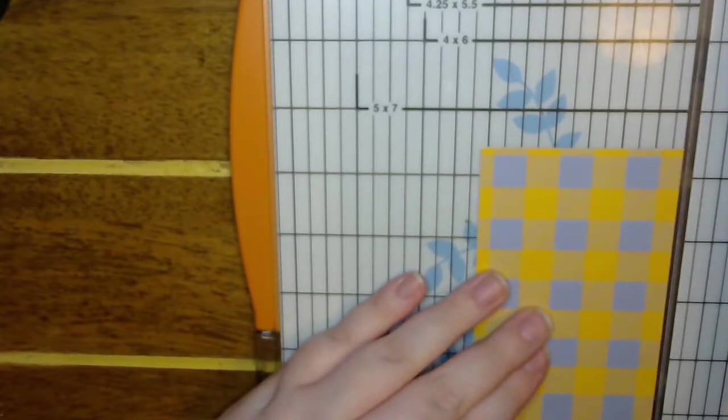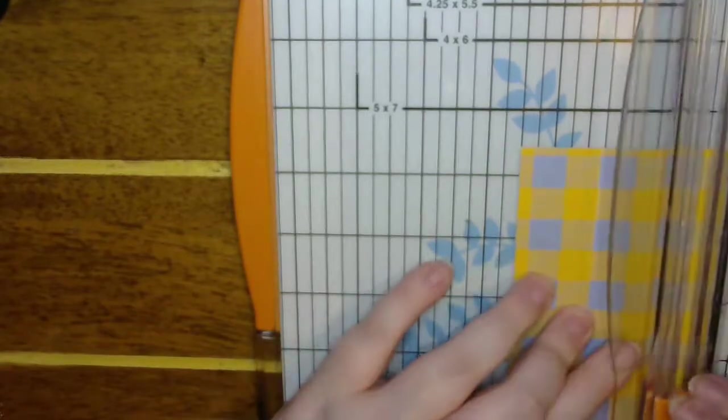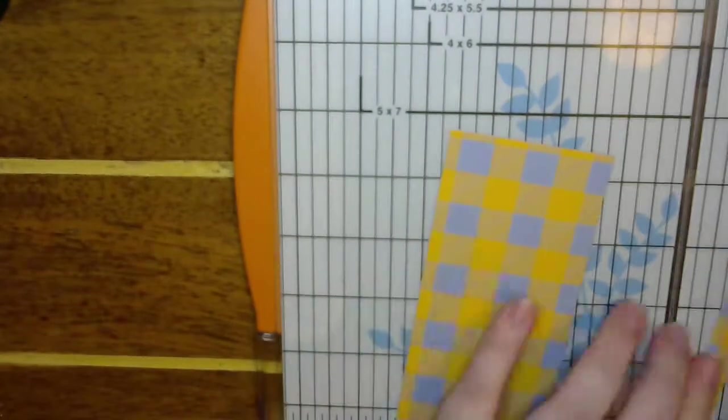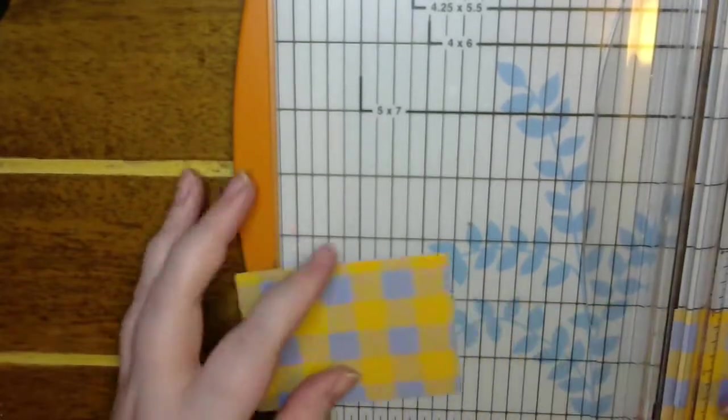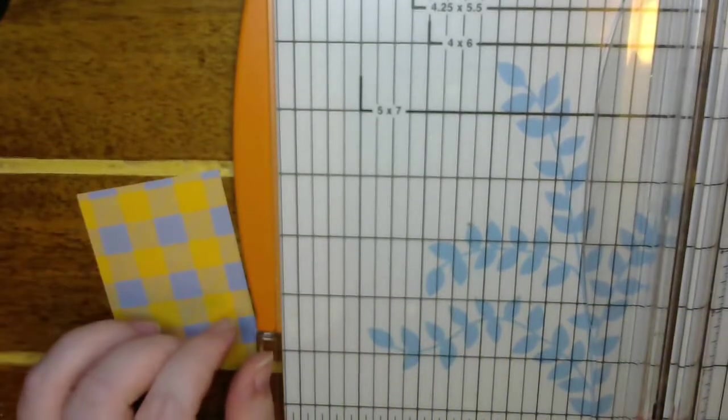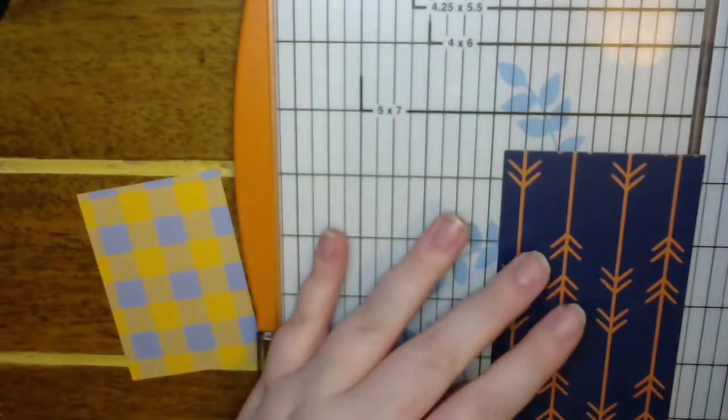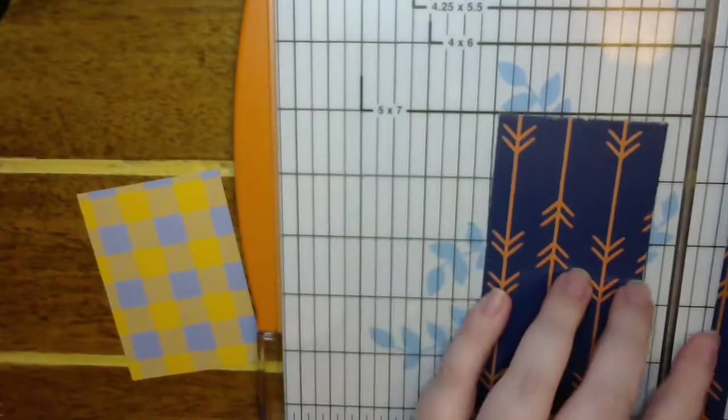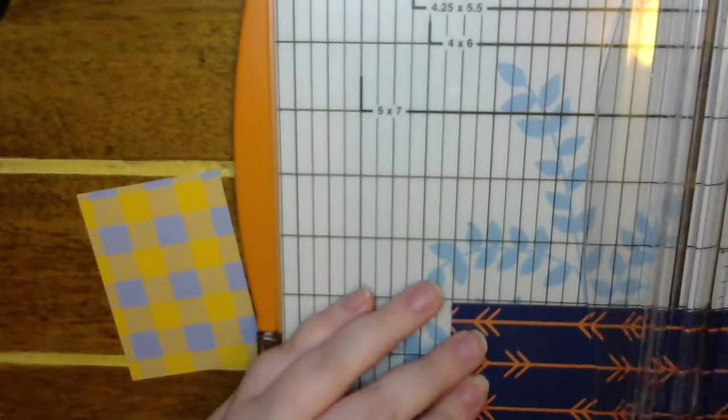So I'm going to start off with some plaid papers. Let's do 2 1⁄2 x 3 1⁄2. Then we'll use this blue 2 1⁄2 x 3 1⁄2.